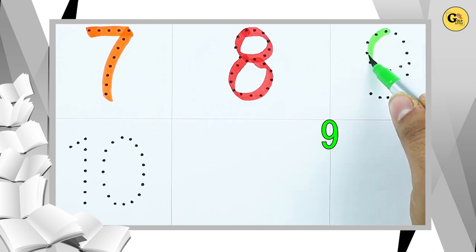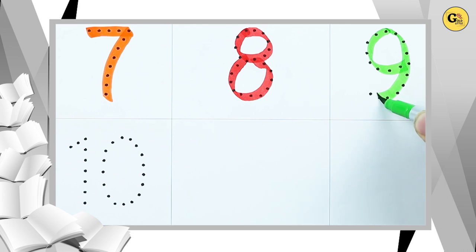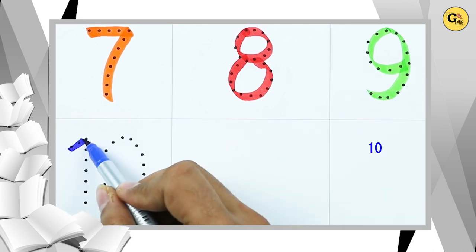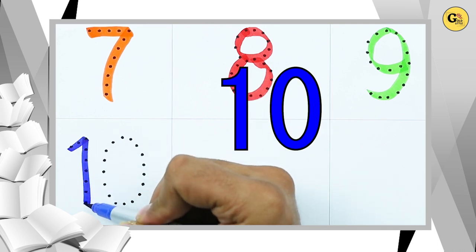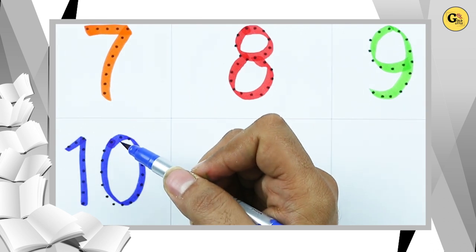Number 9 with green color. It's number 9. Number 10. 1 and 0. It's number 10 with blue color.